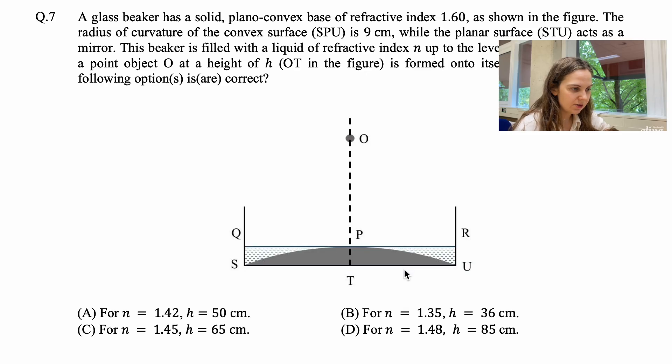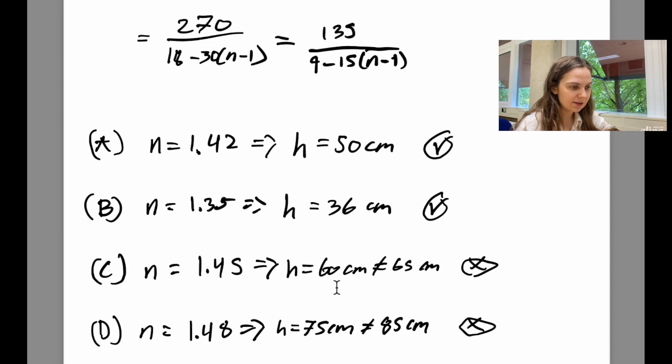However, if we now try the other two options, so for C, we have that N is 1.45. Using our formula, we get that h is 60 centimeters, which is not 65 centimeters as given. So C is incorrect. Similarly, for D, where we have N being equal to 1.48, by using our formula, we get that h is 75 centimeters, which is not 85 centimeters. So D is incorrect. So the answer to this question is that A and B are correct. So that's good.